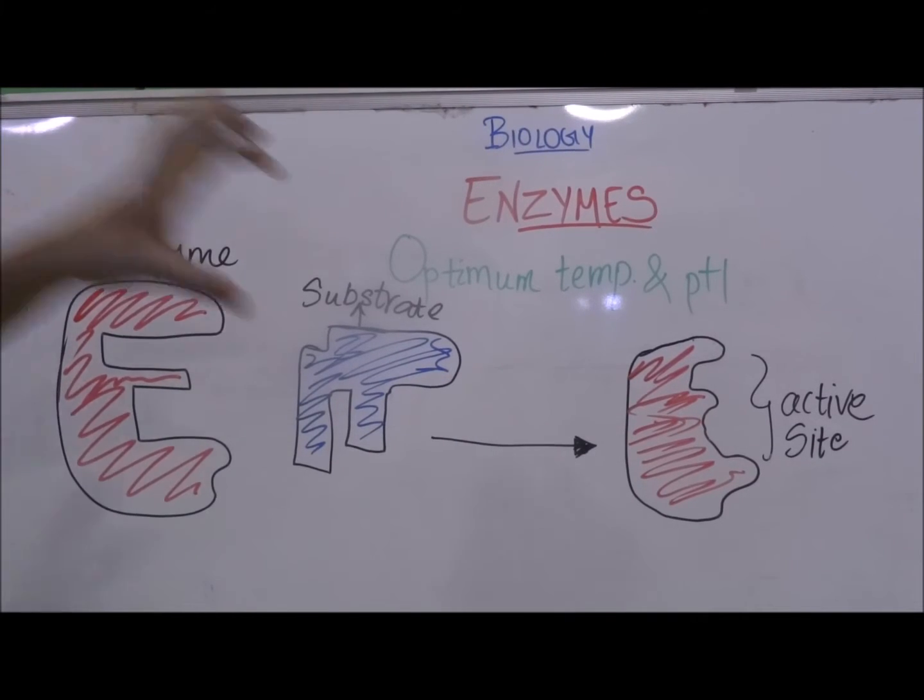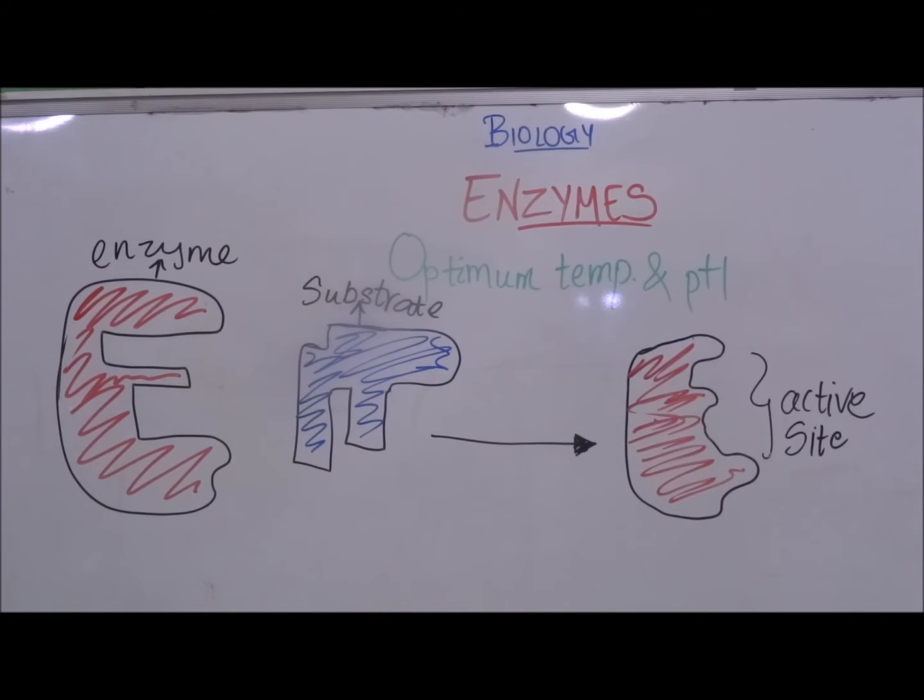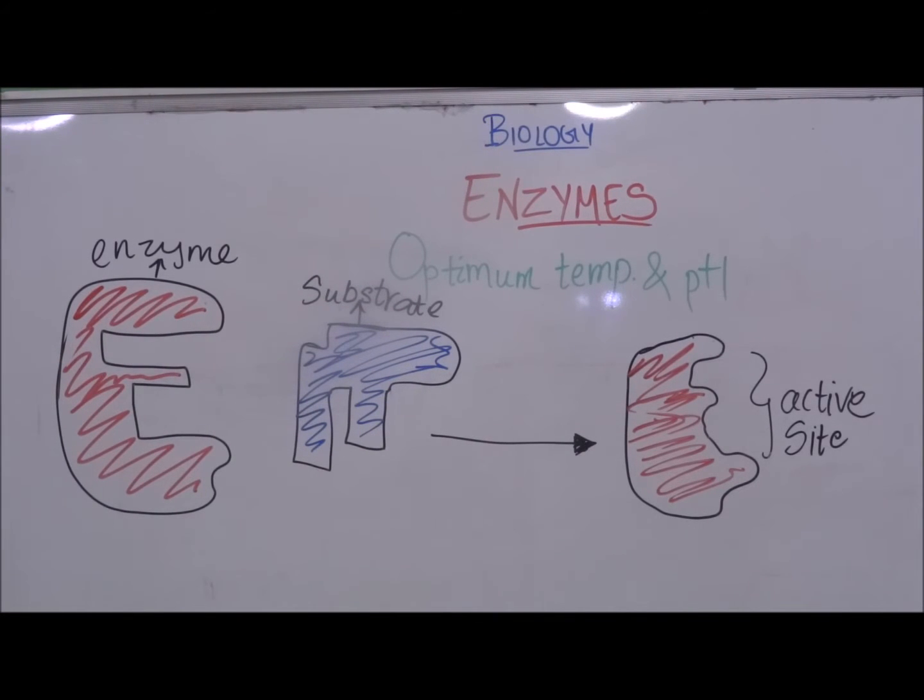So this is our enzyme and this is the substrate. When the temperature rises above its optimum temperature then the enzyme becomes denatured. Or when the pH reaches to a certain pH where it is harmful then the enzyme gets denatured. So when an enzyme gets denatured its active site loses its shape.